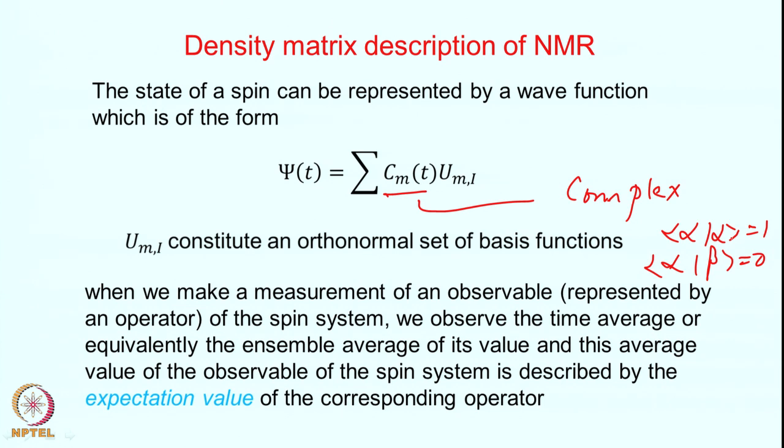Individual spins are represented that way — each spin evolves in a particular manner. In the classical picture, each spin precesses around the surface of a cone, acquiring a phase that keeps changing. This is what we mean when we say the C_m coefficient is changing — its phase is changing. Each spin has a particular value of C_m(t).